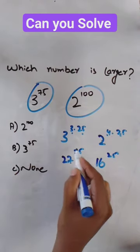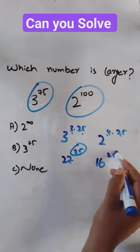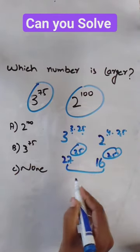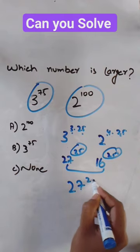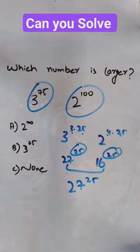Both powers are the same. So whichever base is higher determines the answer — 27 power 25 is the higher number.